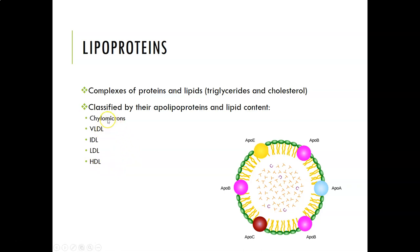Chylomicrons and VLDL mostly carry triglycerides. Chylomicrons are made by intestinal cells to transport dietary triglycerides and cholesterol to the liver and other body cells. VLDL mainly transports triglycerides made by the liver from excessive carbohydrate intake. LDL and HDL are more independently involved in cholesterol transport — LDL takes cholesterol from the liver to body cells, and HDL from body cells back to the liver.